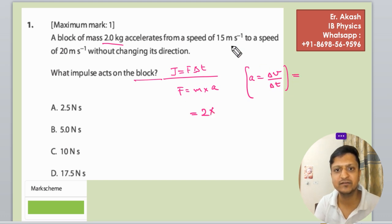Delta v is 20 minus 15 divided by delta t, because no time is given to us. This is v minus u, the final velocity is 20 and initial velocity was 15.